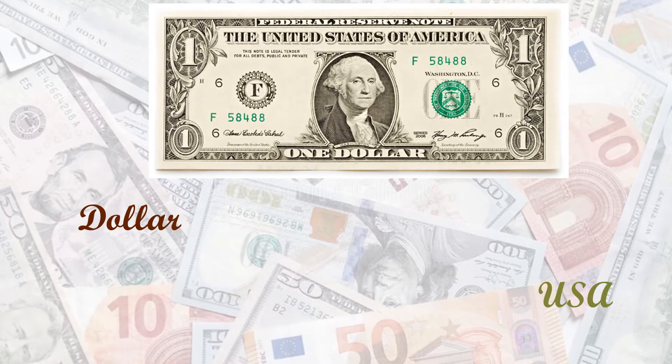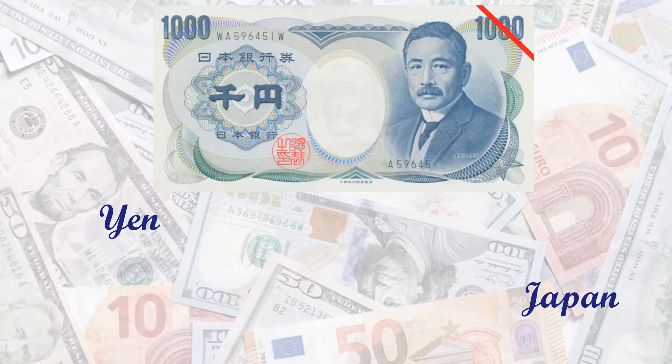This is the dollar. Dollar is the currency of USA. Match the currency dollar with USA. And this one is Yen. Yen is the currency of Japan. Student, match the Yen with Japan.